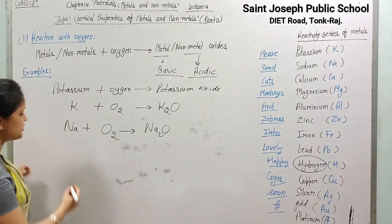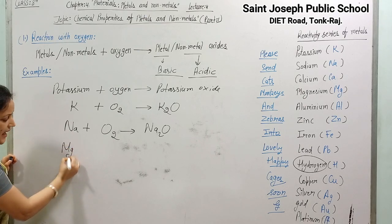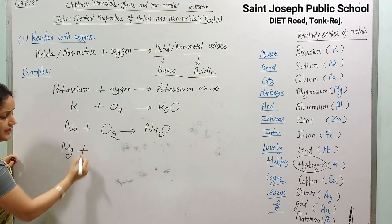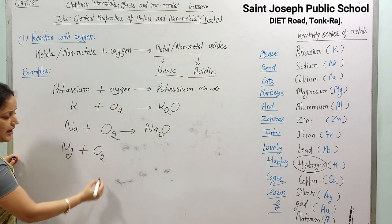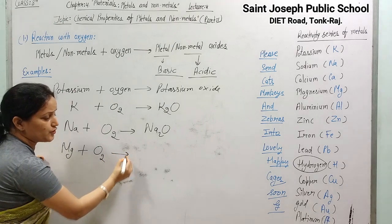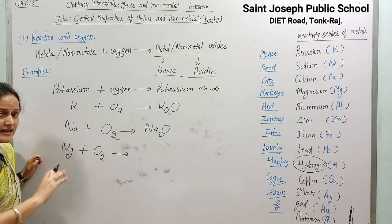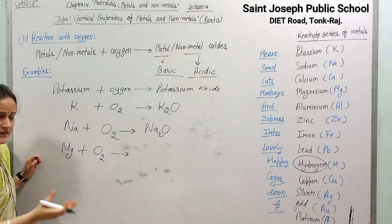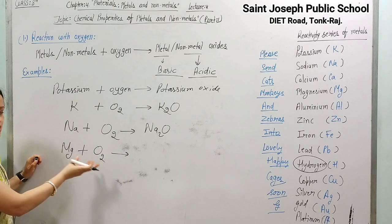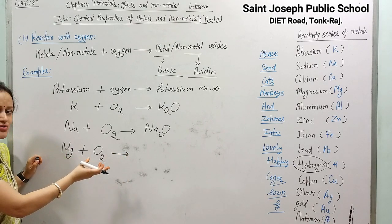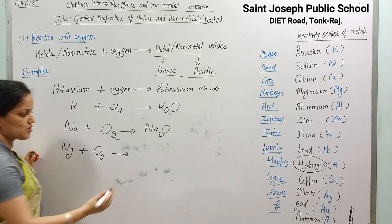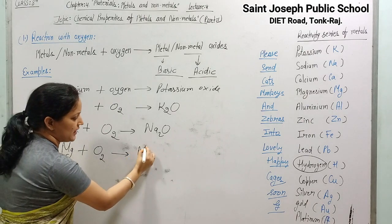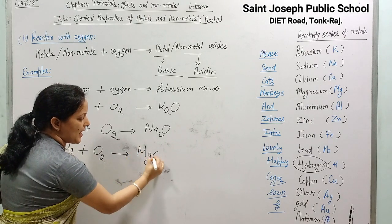Talking about magnesium: the symbol of magnesium is Mg; when it reacts with oxygen (O₂) it forms magnesium oxide (MgO).